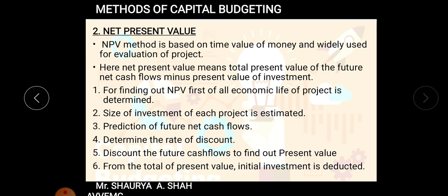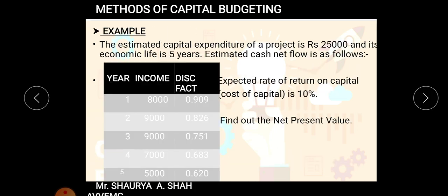Here is an example: the estimated capital expenditure of a project is 25,000 and its economic life is five years. The estimated cash flows are: Year 1 — 8,000; Year 2 — 9,000; Year 3 — 9,000; Year 4 — 7,000; Year 5 — 5,000. These are the estimated cash flows for the five-year economic life.